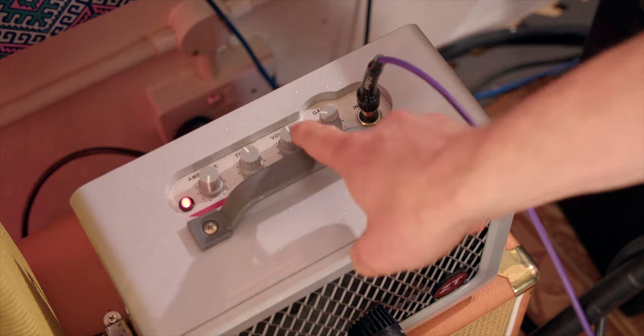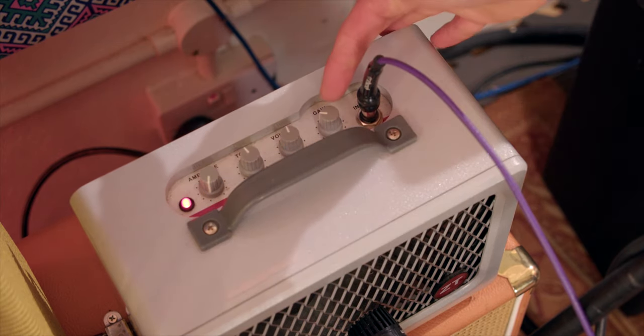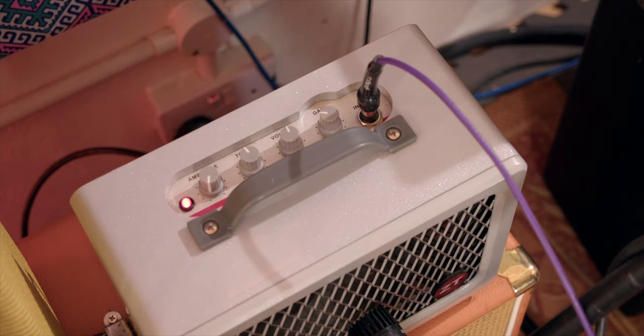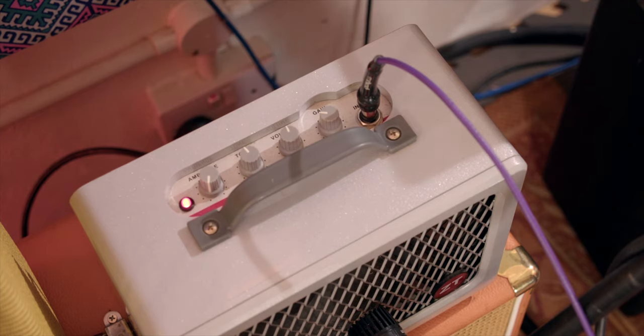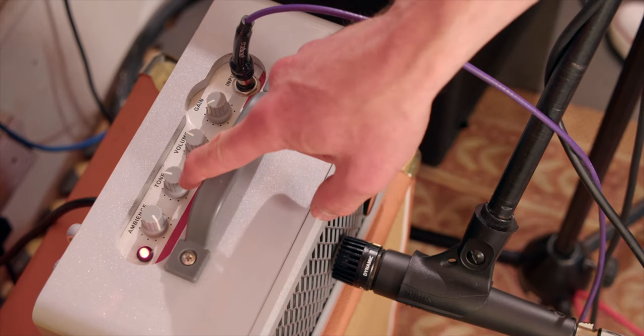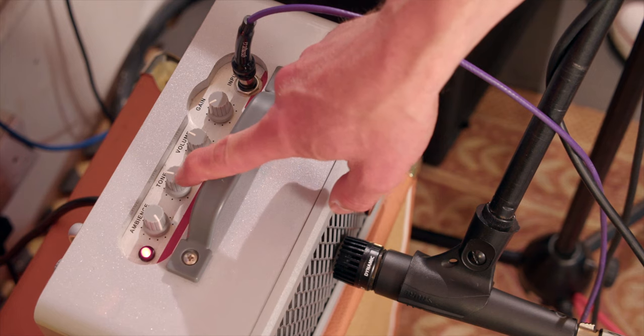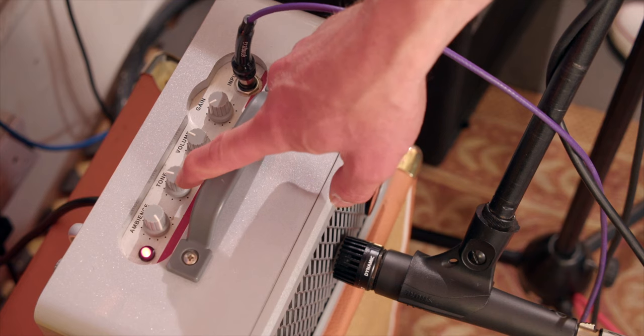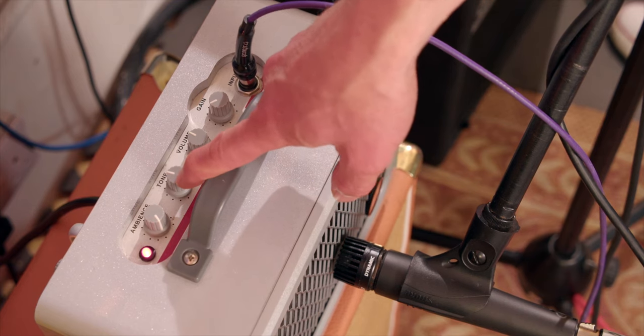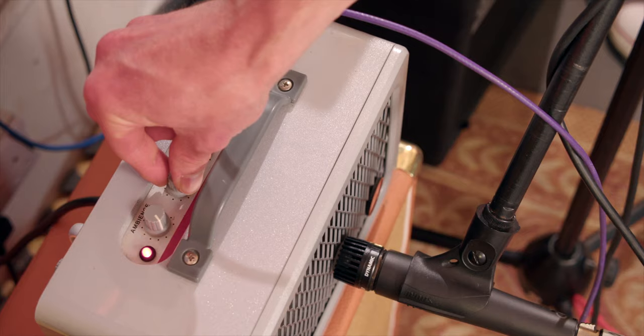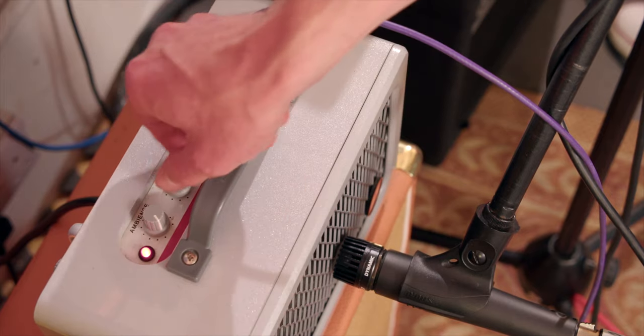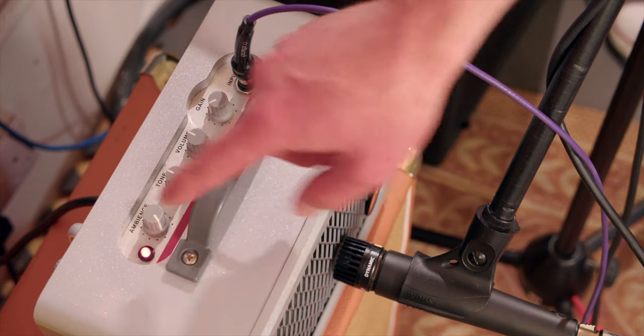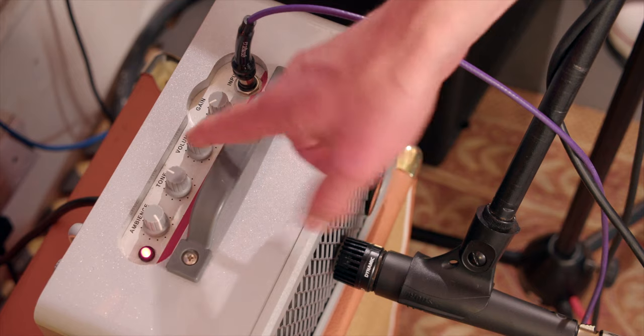So remember, the volume is your overall volume of the amplifier, and the gain is what changes the color, the distortion of your sound. So here we have a tone knob, which is going to affect how bassy and muffled something is sounding or how bright and trebly it's sounding. This tone knob, if you set it at 12 o'clock, if you turn it anti-clockwise, it's going to remove treble. If you turn it clockwise, it's going to add treble.